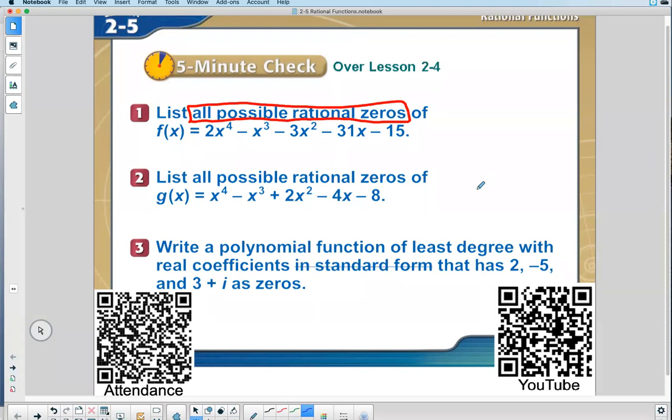Now, what two terms do we choose out of this long equation to find all possible rational zeros? Who remembers? Very good. Yeah, you use the very last term. Whoops. I'll try this again. Negative 15. And the very first coefficient on the coefficient of the leading term. As Alejandro said, the first term would be two.